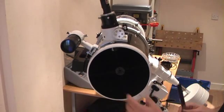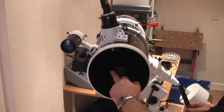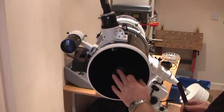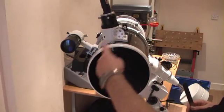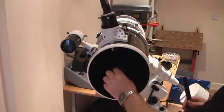But the first thing that you're going to want to do is to center this, the boss that holds your secondary mirror. It actually needs to be right in the center of your diameter of your telescope.